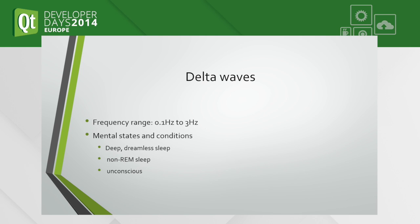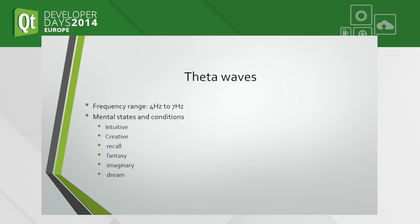Here is a quick look in detail. Delta waves are involved when your brain is very relaxed, or when you are sleeping and unconscious. Theta waves are involved when you use your brain for creative tasks, when you recall something, or when you are imagining something.